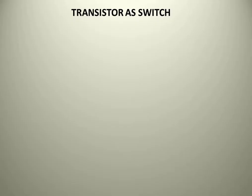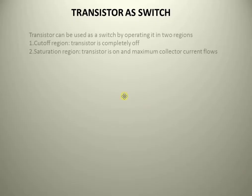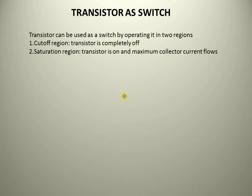Transistor as switch. A transistor can be used as a switch by operating it in two regions: one is the cutoff region and the other is the saturation region. In the cutoff region, the transistor is completely off. And in the saturation region, the transistor is on and maximum collector current flows through it.